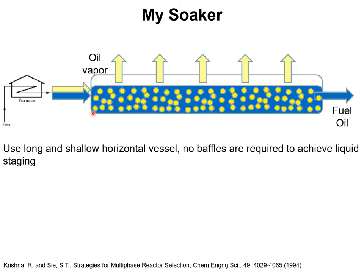One well-mixed stage would correspond to a section of the column in which the length is equal to the height. So if the height-to-length ratio is one, we would have a well-mixed vessel. In this drawing, we would already have six well-mixed stages, which would correspond nearly to plug flow of the liquid phase. The vapor residence time is kept short because the height of the vessel is low, thereby restricting the vapor residence time and preventing over-cracking of the vapor.